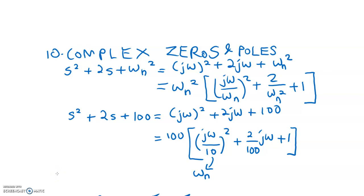Assalamualaikum and hi. We continue back on topic 10, frequency response theory part 3. This is the last theory: number 10, complex zeros and poles.